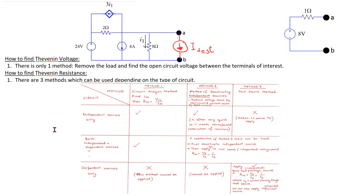This same approach works when the circuit contains both independent and dependent sources. Consider this circuit of interest, which has Thevenin equivalent circuit parameters as shown here. We can connect a test current source as shown here and then run a DC sweep for the test source magnitude. When the test source magnitude is 0 amps, the voltage VAB is equal to the Thevenin voltage. Then we find the value of ITEST magnitude when VAB is equal to 0, and that gives us I short circuit.